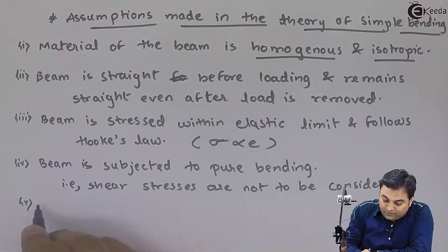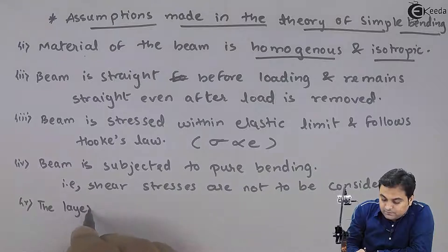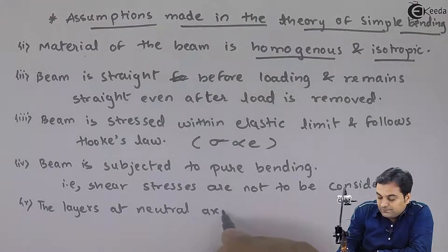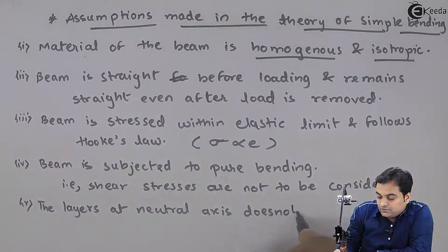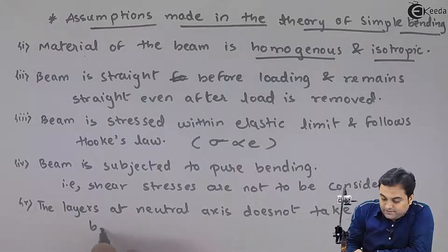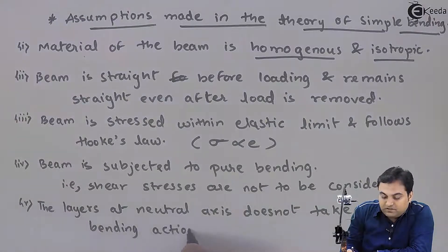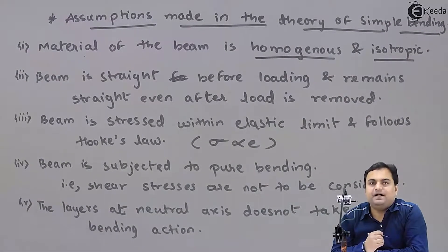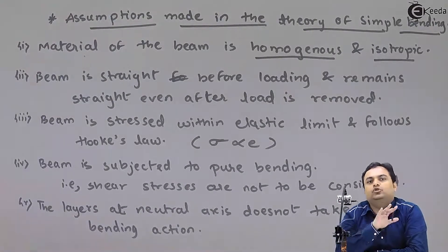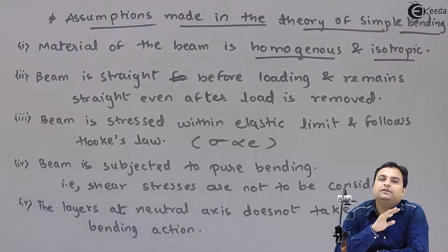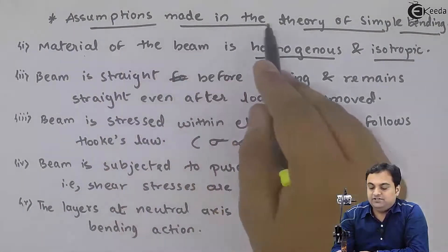The fifth assumption is that the layers at the neutral axis do not take part in bending action. Neutral axis pe jo layers honge wo bending action mein part nahi le rahe hain. In other words, at the neutral axis there is no bending. This means their cross-sectional area before bending is the same as after bending. These were the assumptions made in the theory of simple bending.